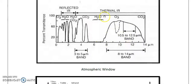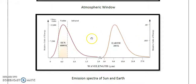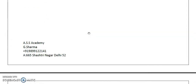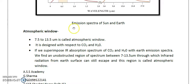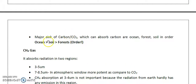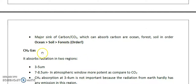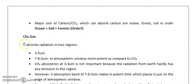Regarding the major sinks of carbon — meaning what can absorb carbon — the biggest sink is the ocean, followed by soil, followed by forest. Now coming to methane, which is another important greenhouse gas.